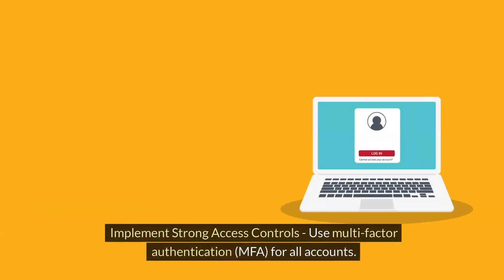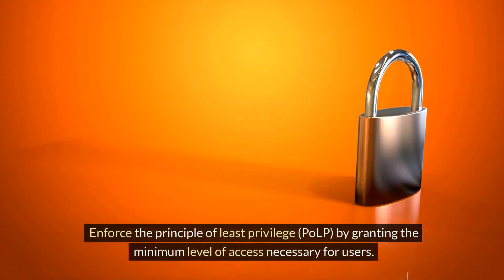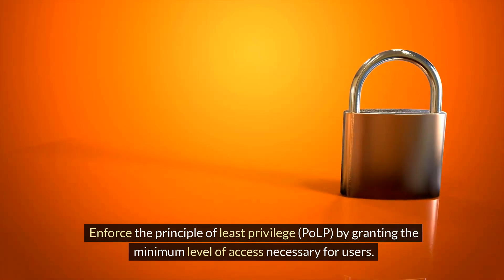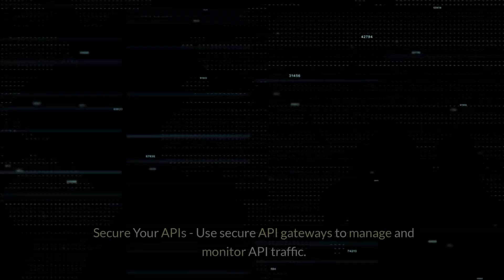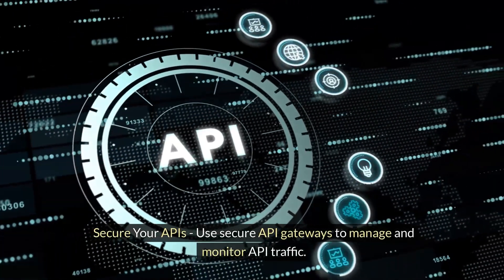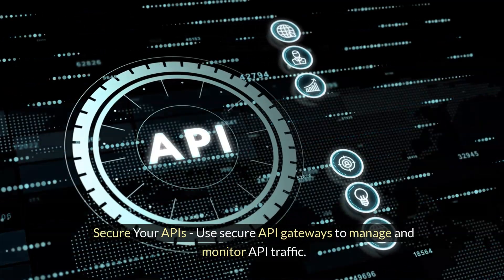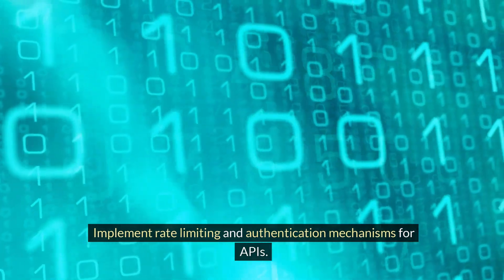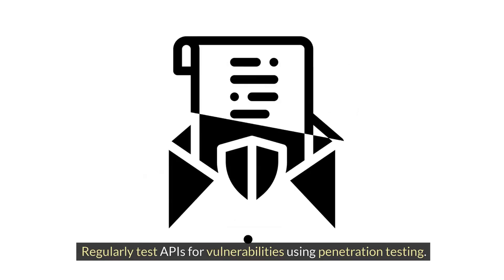Implement strong access controls. Use multi-factor authentication for all accounts. Enforce the principle of least privilege by granting the minimum level of access necessary for users. Regularly review and update access permissions. Secure your APIs: use secure API gateways to manage and monitor API traffic, implement rate-limiting and authentication mechanisms for APIs, and regularly test APIs for vulnerabilities using penetration testing.